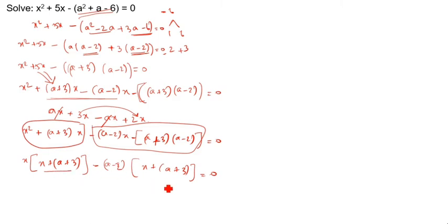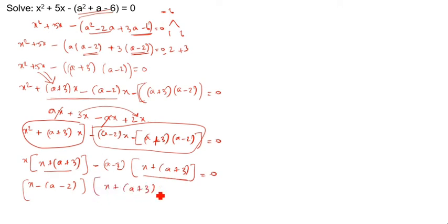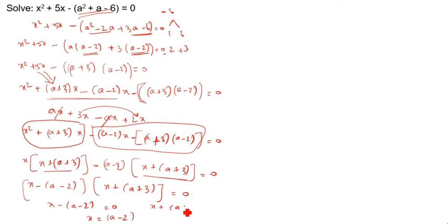So x plus a plus 3 equals 0. Both numbers should be the same — it comes out the same. So we can take x minus (a minus 2). Next: x plus (a plus 3) equals 0, so x equals a minus 2. And x plus a plus 3 equals 0 gives x equals minus (a plus 3). These two are the answers — this is the first method.